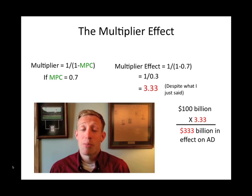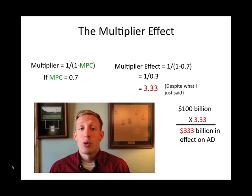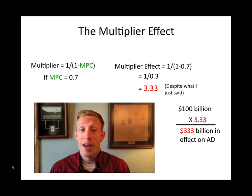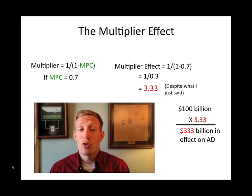That's very important for government to understand, because if they're going to shift the aggregate demand curve to a certain level, they may overshoot this or vastly undershoot it if they don't take into account the marginal propensity to consume of the general population.